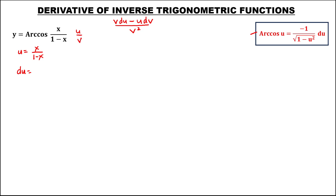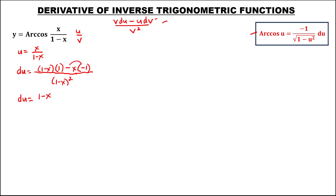So this is u over v. By this formula, we have v — v is 1 minus x — times the derivative of u, so the derivative of x is 1, then minus u times the derivative of v. The derivative of 1 minus x is negative 1, then over v to the power 2. To simplify: 1 minus x, this becomes positive x, then over 1 minus x quantity to the power 2. So therefore du, the derivative of u — this one is 0 — so we have 1 over 1 minus x quantity to the power 2.